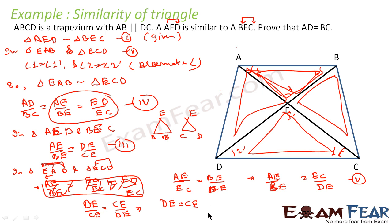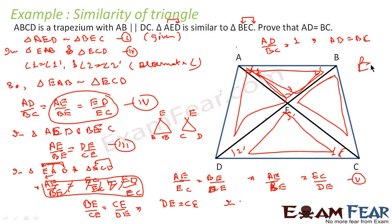Once DE is equal to EC, we put this back into our similarity ratio equation: AD/BC = ED/EC = 1. Therefore AD is equal to BC. That's it — we have proved the result.